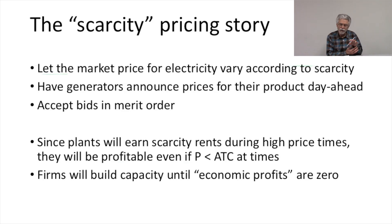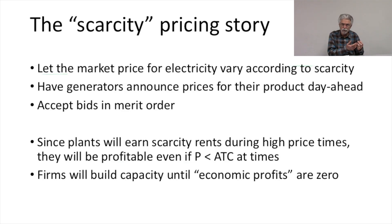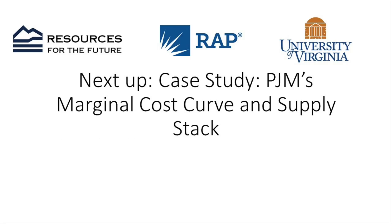One of the things we talked about early on was the need to make sure that resources get compensated effectively for all of the services they provide. The scarcity pricing story includes compensation for auxiliary services. As spinning reserves are more valuable, they will be getting paid more in periods where the availability of spinning reserves are especially valuable, and the same is true for other auxiliary services. The scarcity pricing story only works if we're effectively compensating sources for all the services they're providing to the grid. By letting the price float according to marginal cost, we're giving entrepreneurs the right incentive to build the right mix of power plants.